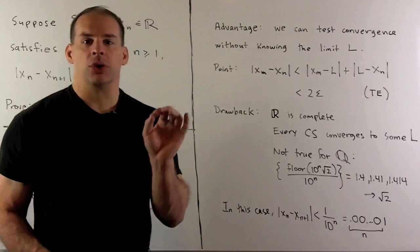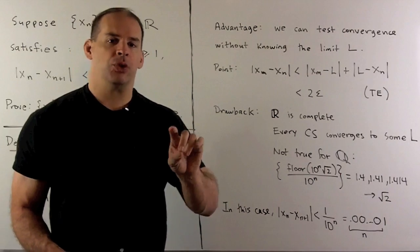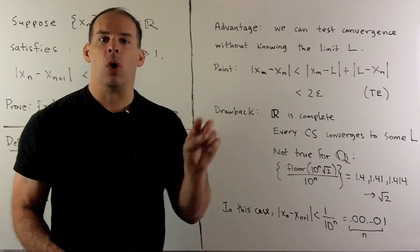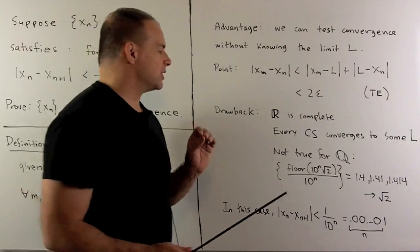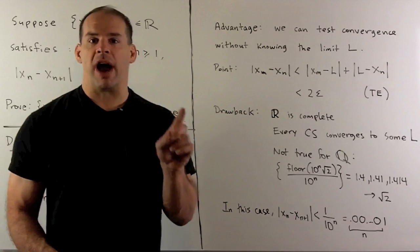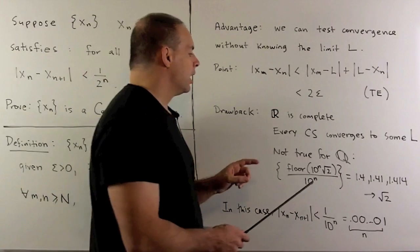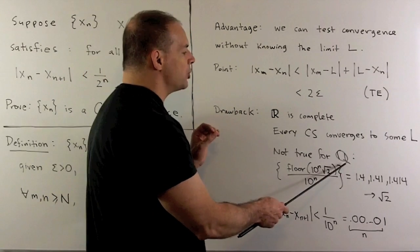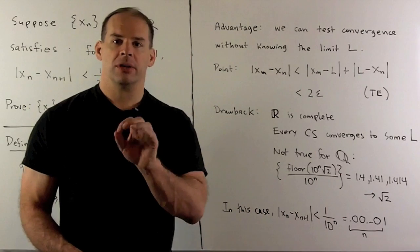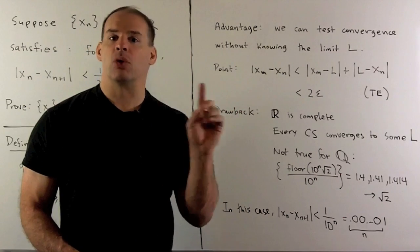The drawback to Cauchy sequences: if we try to generalize to spaces other than the reals, those spaces may have holes in them. For instance, if we consider the rational numbers Q, there's a hole at every irrational point. I can set up a sequence of rational numbers that converges in the real numbers to some number, but not to a rational number.